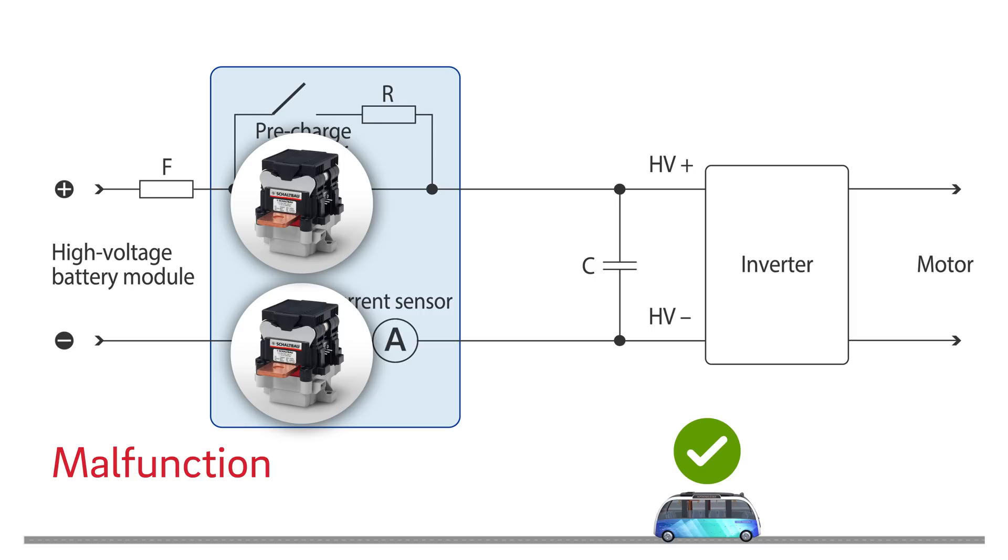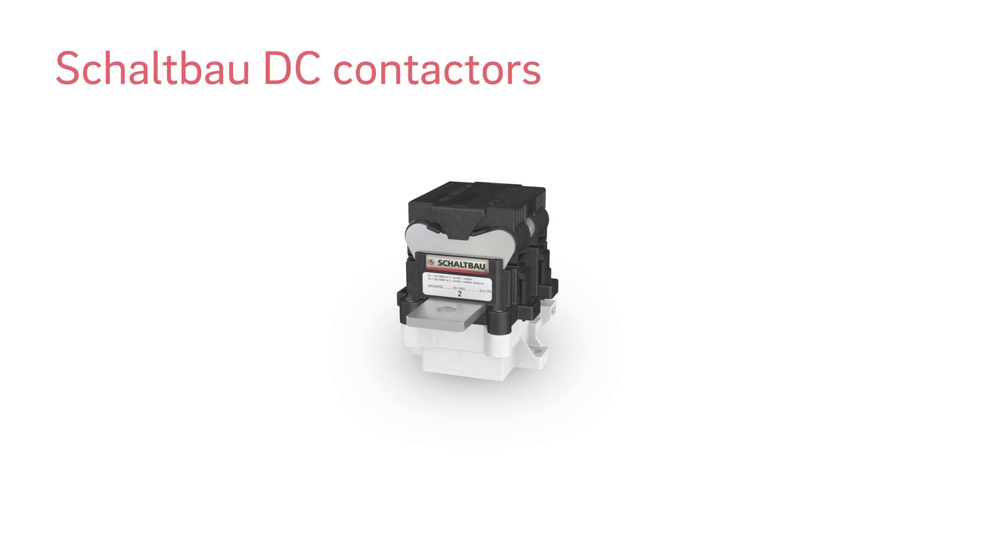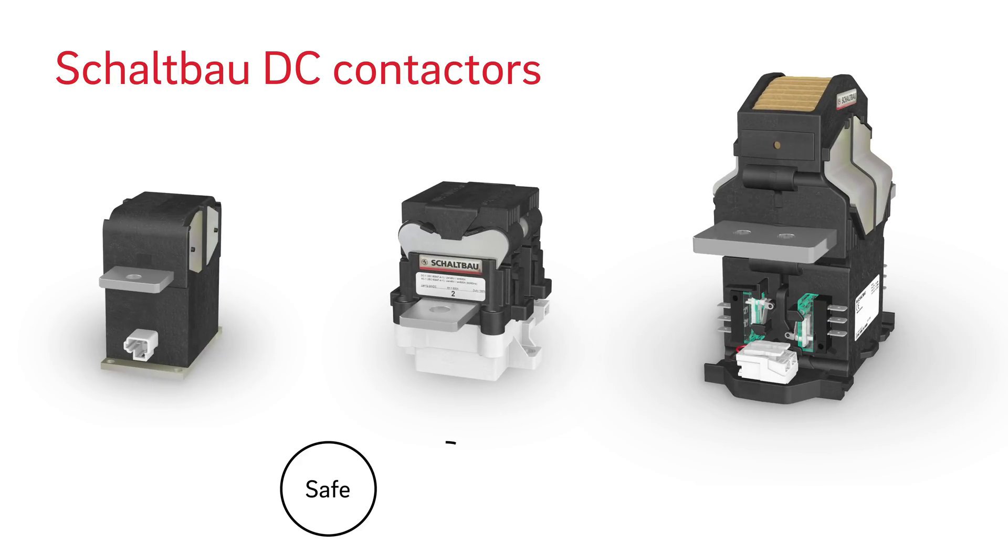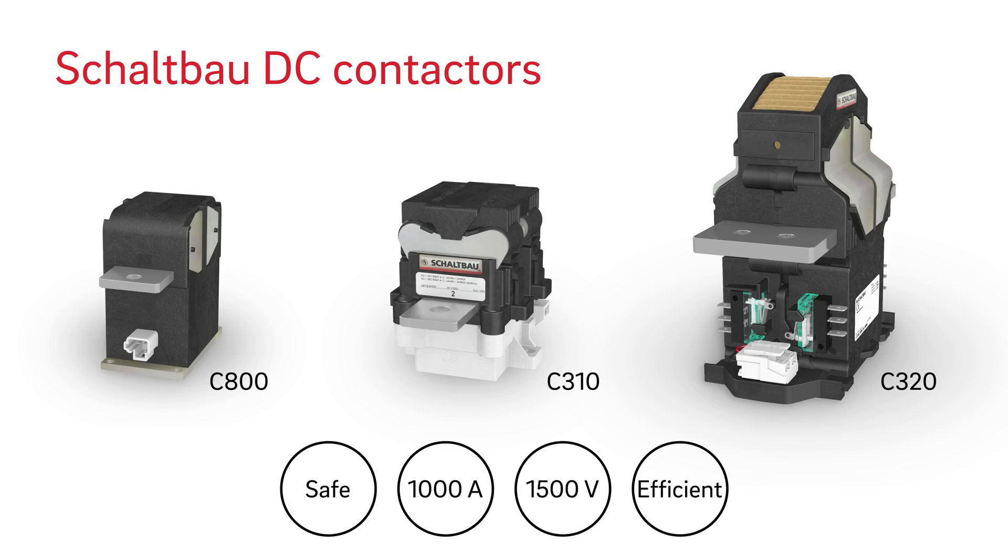This ensures safety for passengers, emergency services and the vehicle itself. Every Schaltbau contactor is packed with expertise. Arc control without gas encapsulated arc chambers. Continuous thermal currents of up to 1000 amperes. Bi-directional DC contactors up to 1500 volts. Optimal switching performance. Low energy consumption.